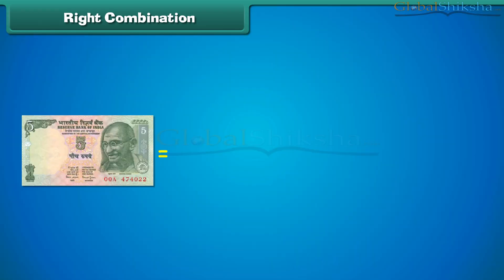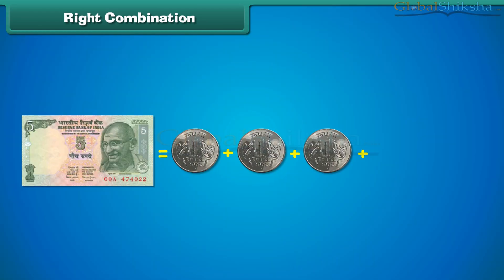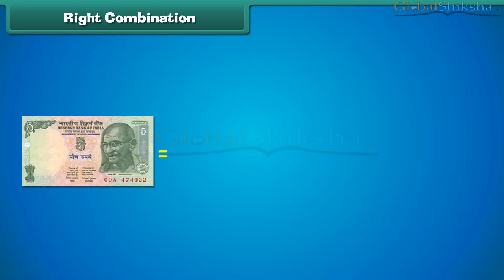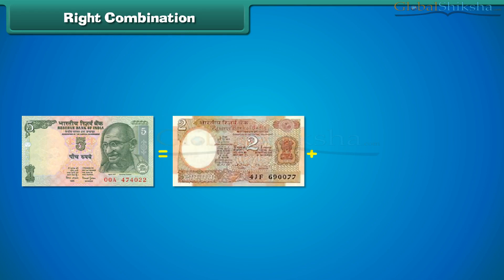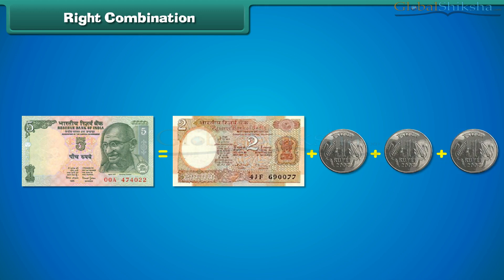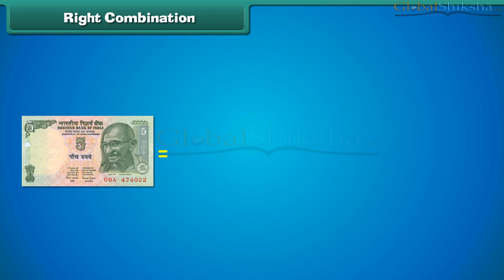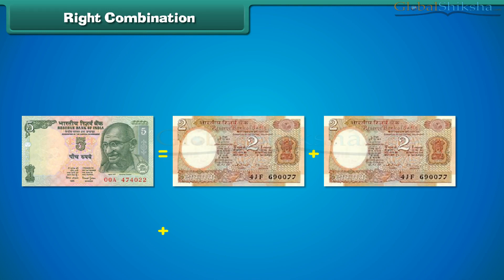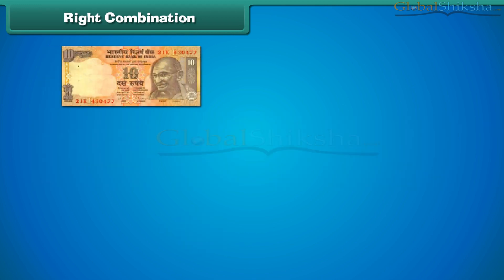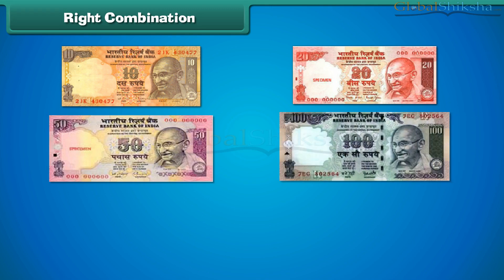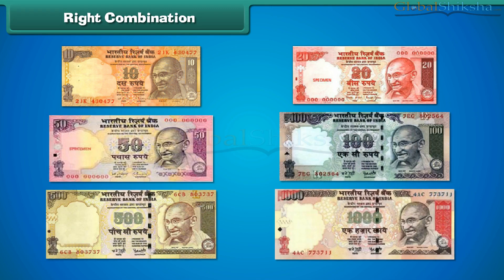Let us learn about some correct combinations of notes and coins. 1 five-rupee note is equal to the sum of 5 one-rupee coins. A 5 rupee note is also equal to the sum of 1 two-rupee note and 3 one-rupee coins. Similarly, 1 five-rupee note is equal to the sum of 2 two-rupee notes and 1 one-rupee coin. All these are the right combinations. Similarly, we can have different correct combinations for 10, 20, 50, 100, 500 and 1000 notes.